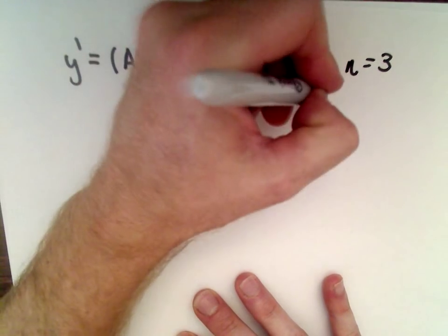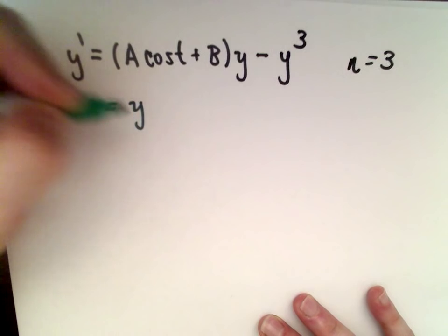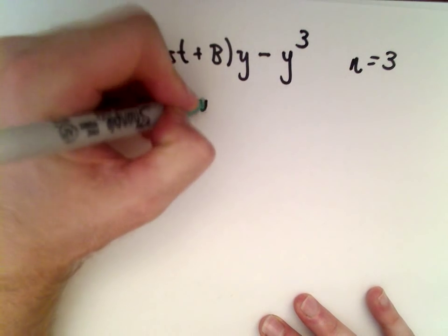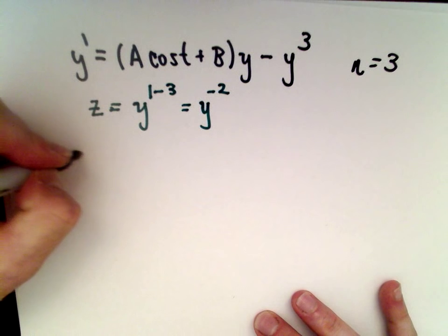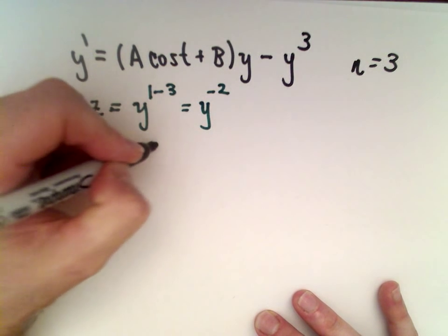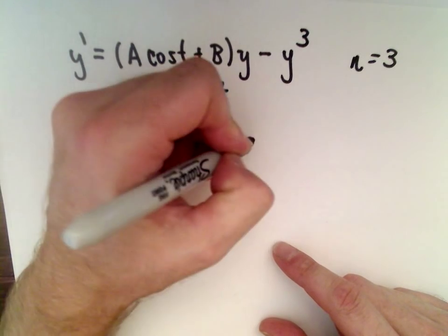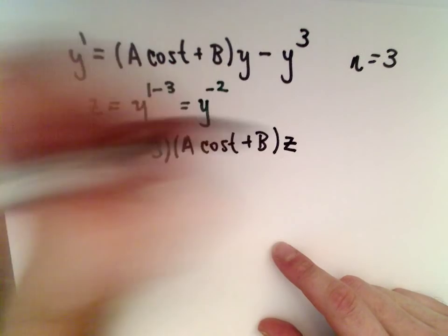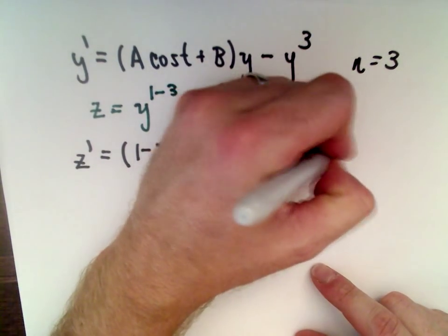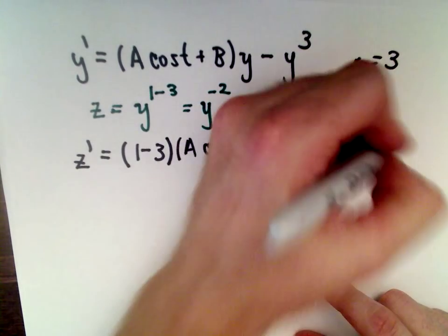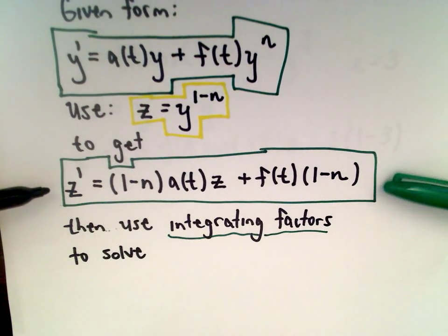Let's fill everything in. We use the change of variables: z equals y raised to the power of 1 minus 3, or y to the negative second. So z prime equals 1 minus n — which is 3 — multiplied by a(t), which is a times cosine of t plus b, multiplied by z. Then the function in front of y to the third is negative 1, multiplied by 1 minus n, which is 1 minus 3. I'm filling in the equation in the green box.